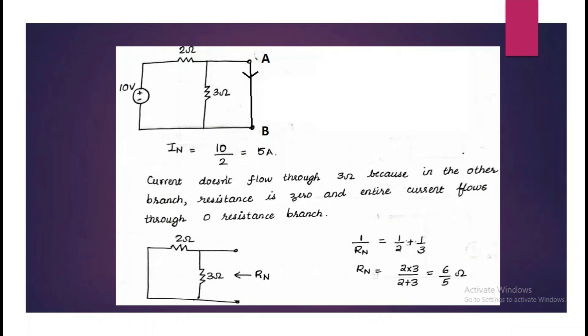Here the current does not flow through the 3 ohm branch because the resistance through the branch AB is equal to zero. So the entire current flows through AB. So IN is equal to 10 divided by 2 which is equal to 5 ampere. So this is the Norton's equivalent current.